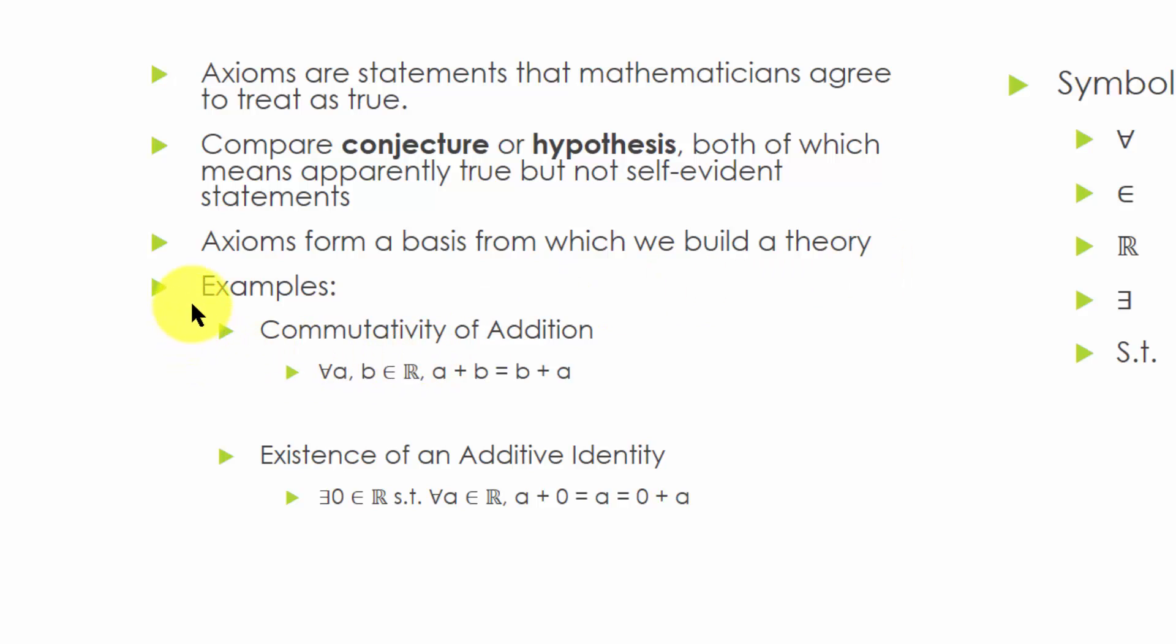Here are two example axioms in real analysis. The axiom of commutativity of addition states that for all a, b in the real numbers set, a plus b equals b plus a.